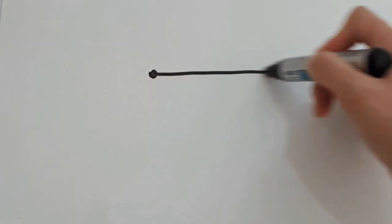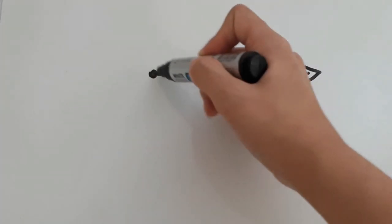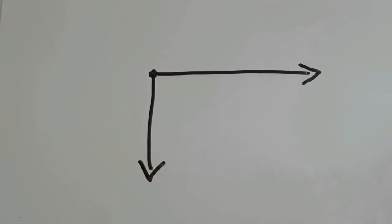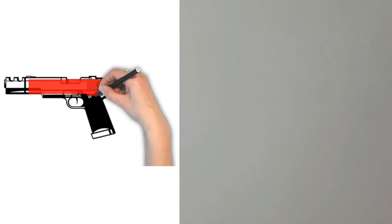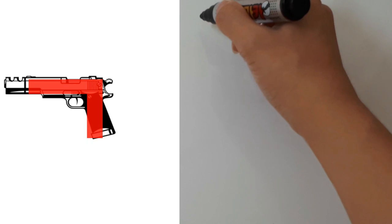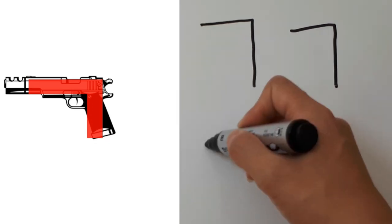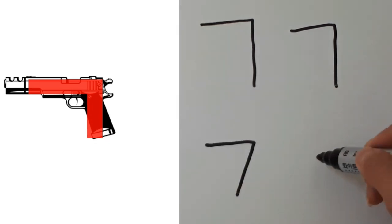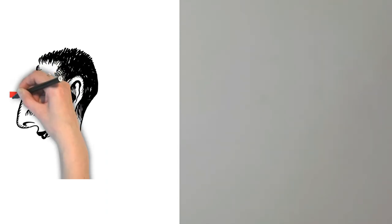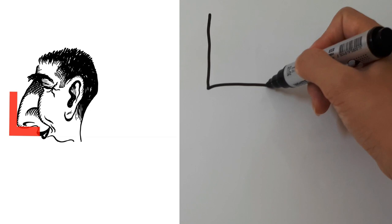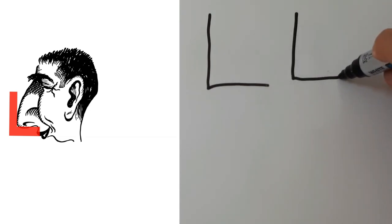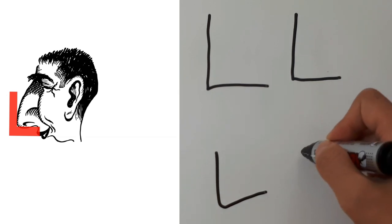I'll show you how to write 한글. When you write any Korean letter or character, you should go from left to right and top to bottom. Let's start with ㄱ — one stroke. Some people write it like this, no problem. ㄴ — one stroke. Some people write it like this, it's alright.